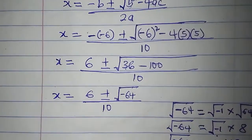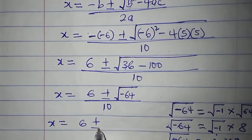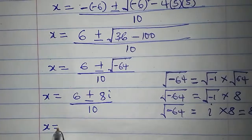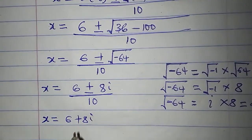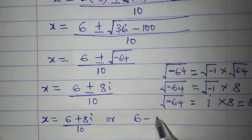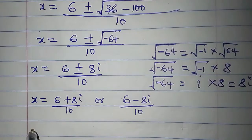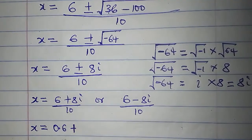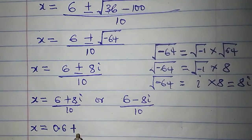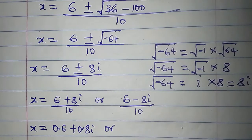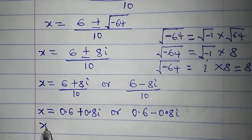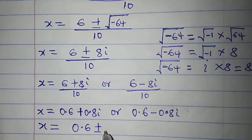We can write this as X equal to 6 plus or minus 8i, all over 10. Going further, X equals 6 plus 8i over 10, or X equals 6 minus 8i over 10. Dividing: 6 by 10 is 0.6, and 8 by 10 is 0.8. So we get X equal to 0.6 plus 0.8i, or 0.6 minus 0.8i — that is, X equals 0.6 plus or minus 0.8i.